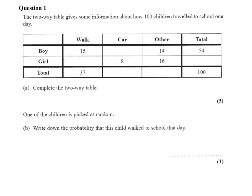We have a two-way table giving information about 100 children and how they travel to school one day. We'll start filling in our easy gaps. If we look at 54 here and the gap here, 54 and this number make 100, so that number must be 46.